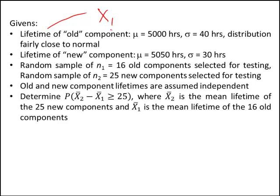The lifetime of the new component, which I'll call X2, has mu equal to 5,050 and a standard deviation of 30 hours. We're going to grab a random sample of 16 old components and 25 new components, look at the quantity X-bar₂ minus X-bar₁, assume independence between the old and new component lifetimes, and then determine a probability. There's a lot going on, so let's do this in pieces.